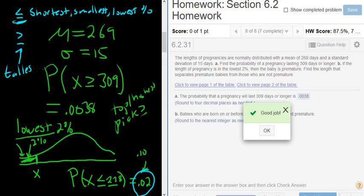If it says tallest, biggest, highest, then you want to pick greater than. And again, that percentage goes in the second box. That works for all of these problems.